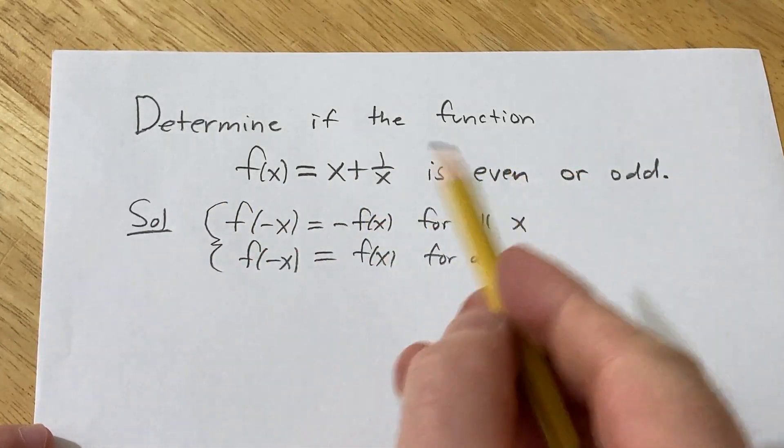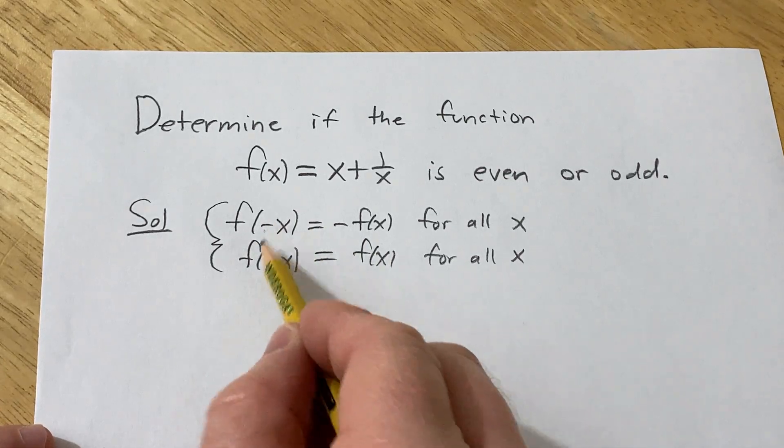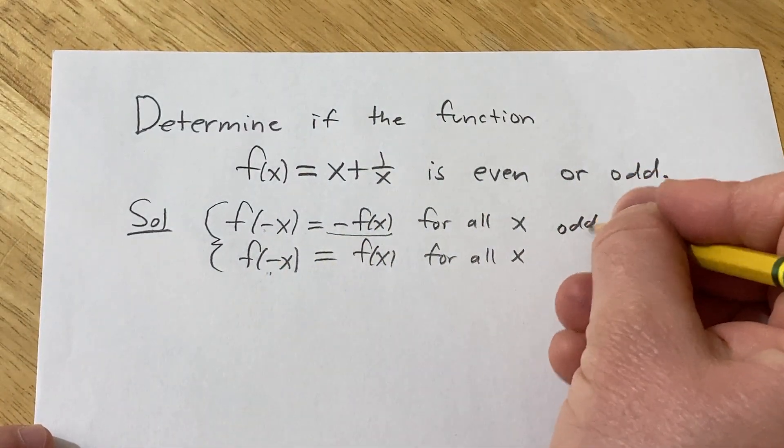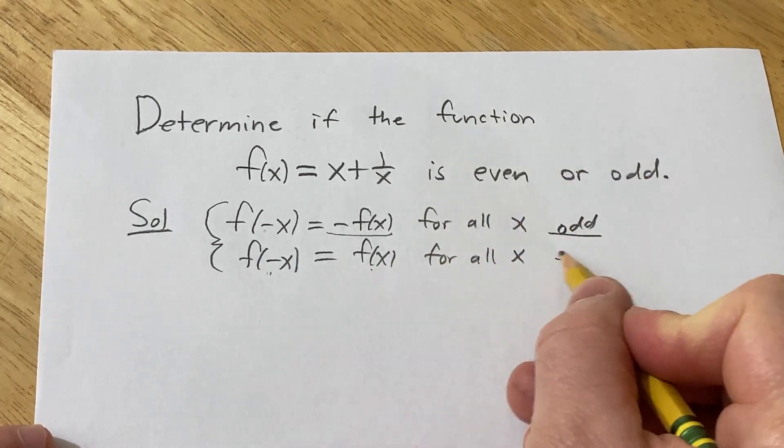In any case, in these problems, all you have to do is start by plugging in negative x. If you get negative f(x), then the function is odd. If you get f(x), then the function is even.